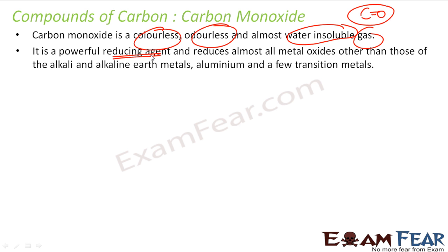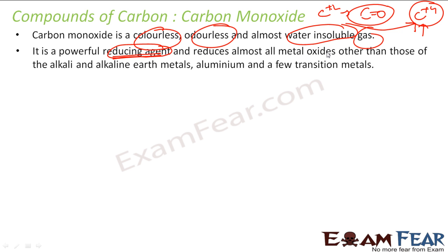Carbon monoxide is a very strong reducing agent. In CO, carbon has an oxidation state of +2. Carbon always wants to have an oxidation state of +4 because it is more stable. So carbon will always oxidize to +4, oxidizing itself and reducing others. It reduces almost all metal oxides, other than those of alkali and alkaline earth metals, because they are more powerful reducing agents.